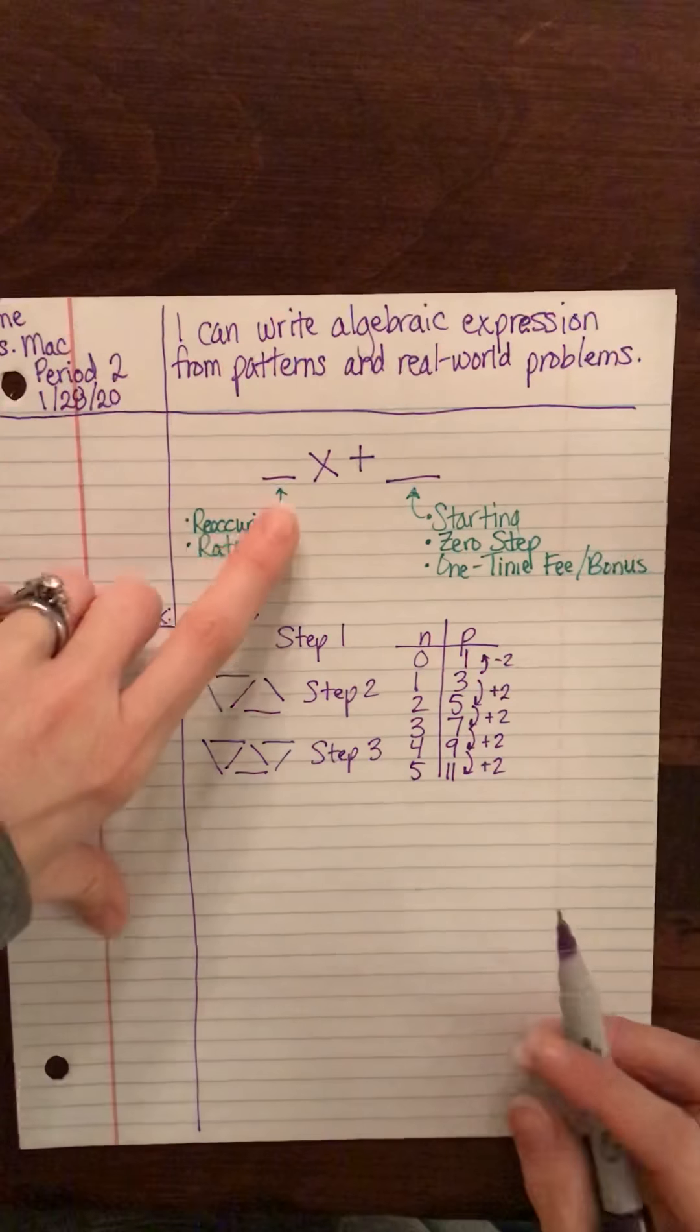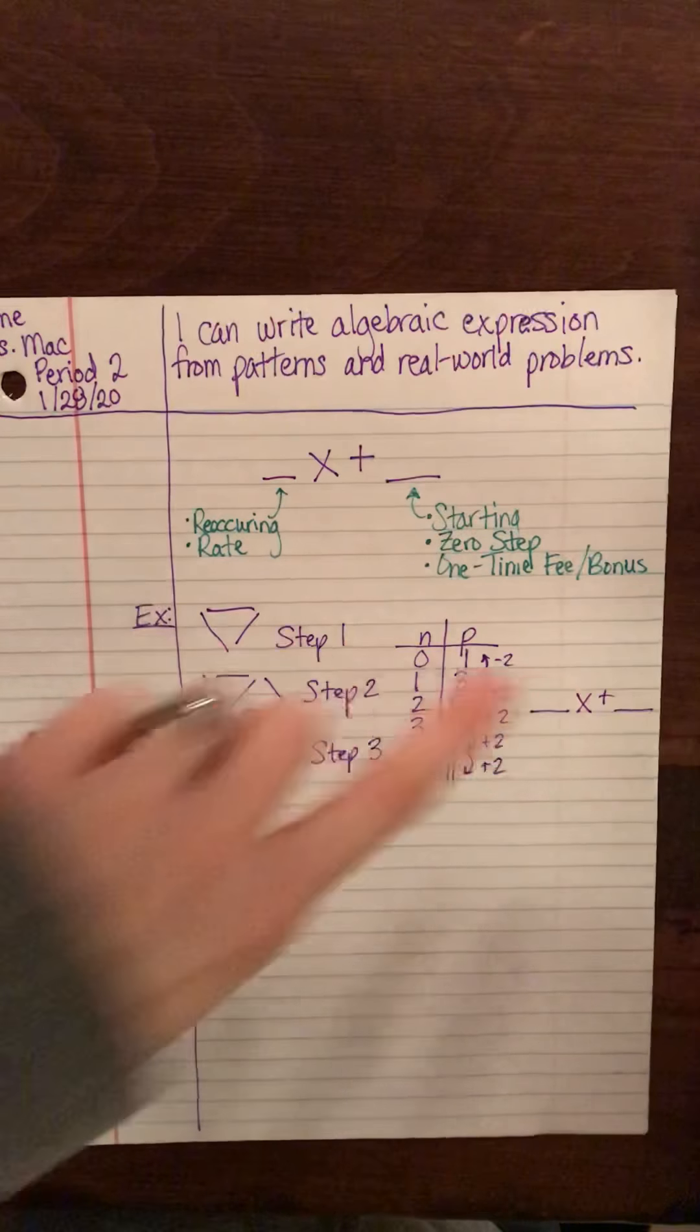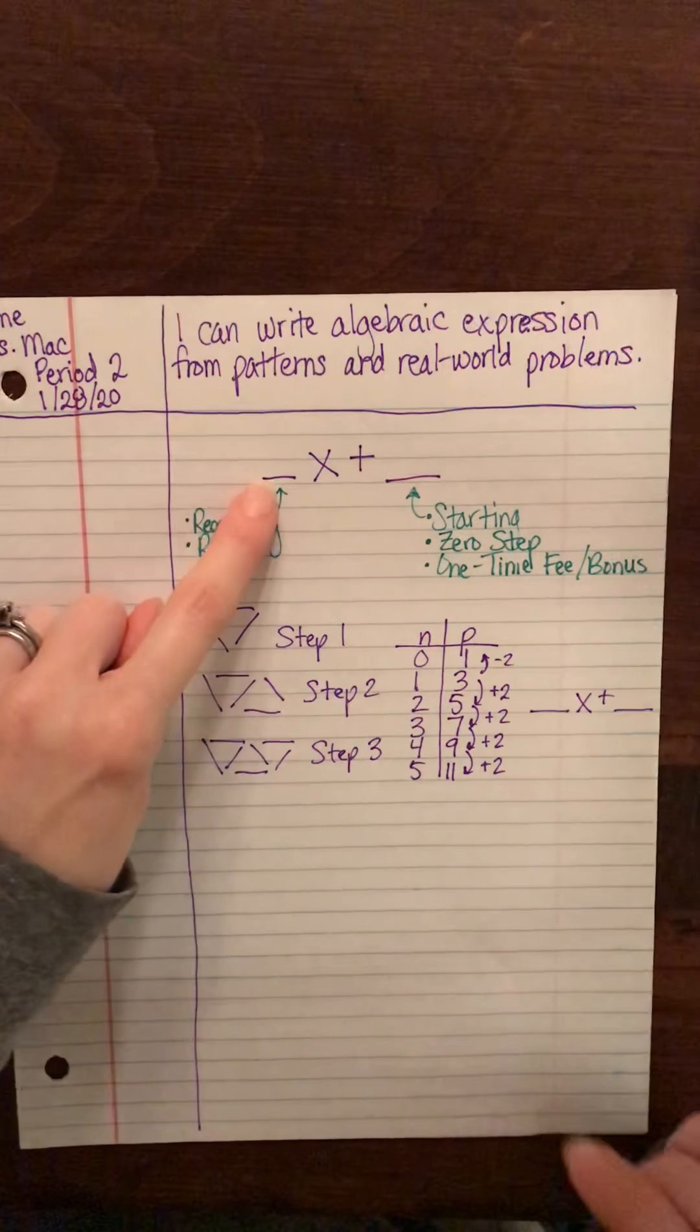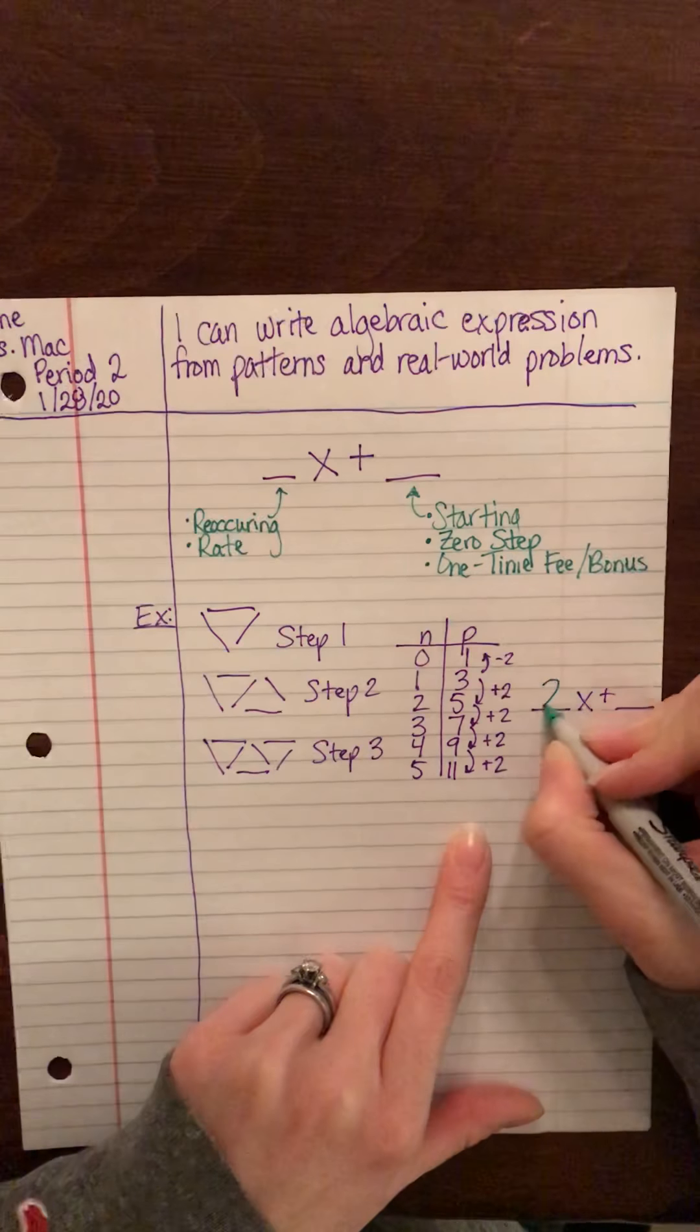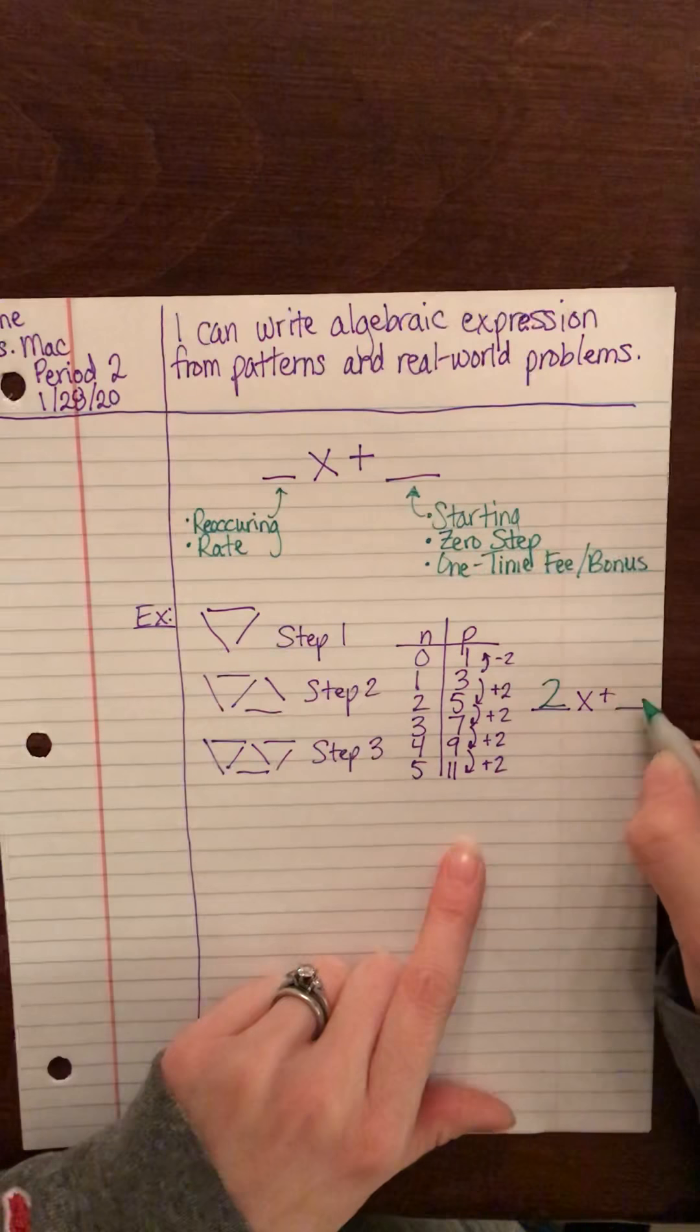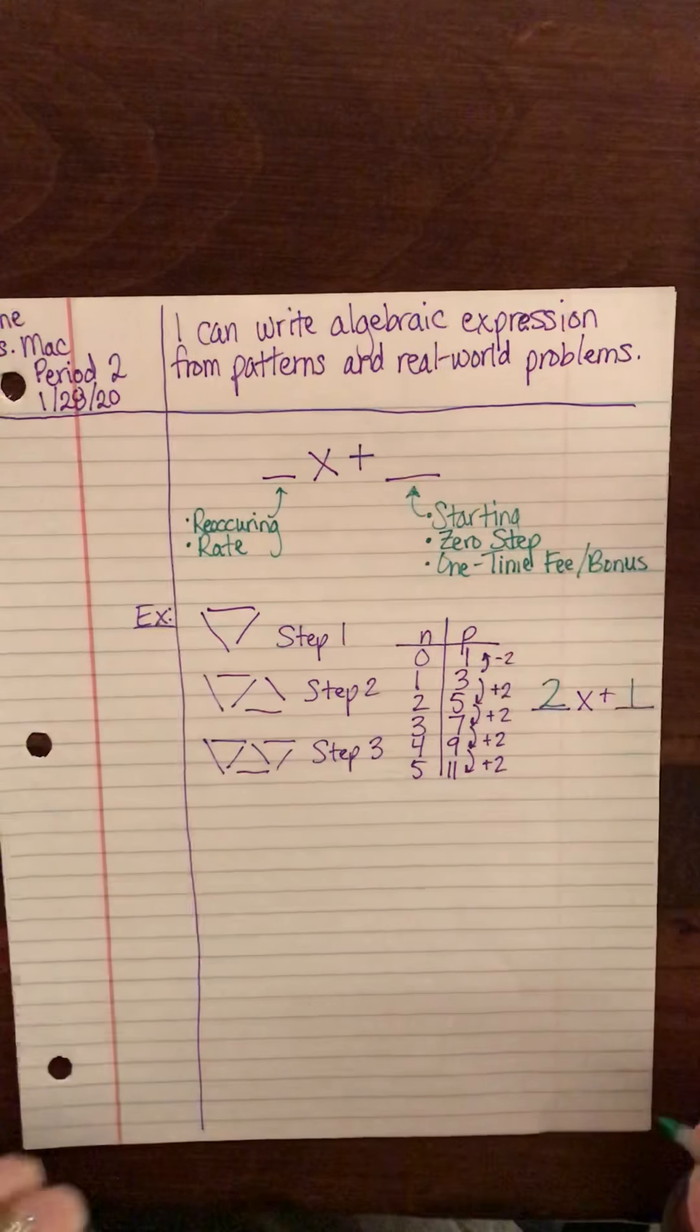So now using this format, I'm going to write it out. You have some number times your variable plus some number. So the number that's being multiplied by your variable is what's reoccurring. In this case, two is being added every time, so that's your reoccurring amount. Now what's being added on the end is your starting point. In this case, that's your zero step. So that's going to be a one.